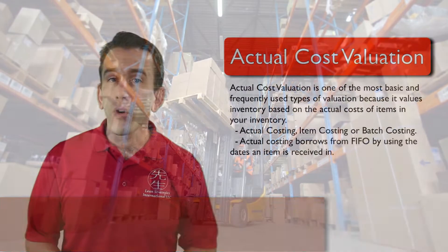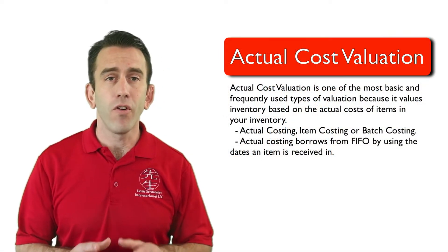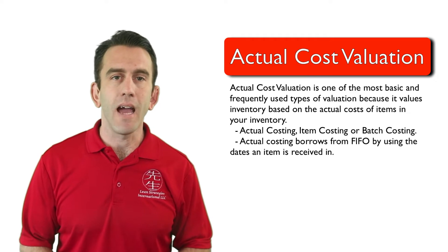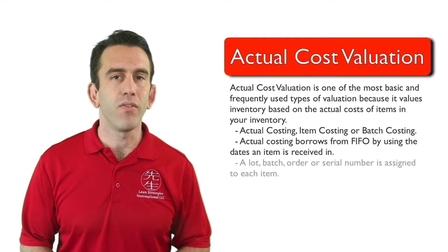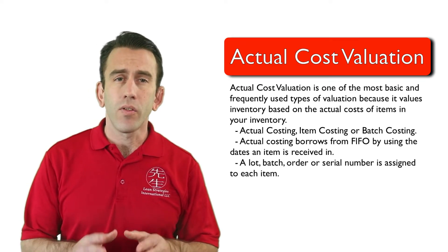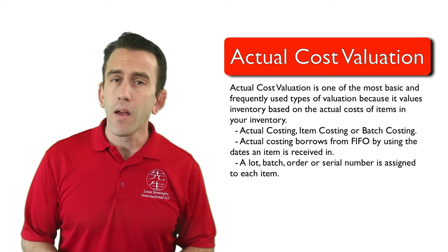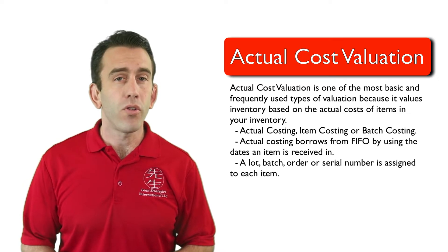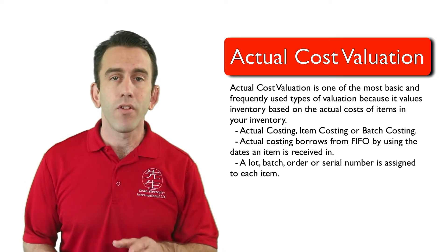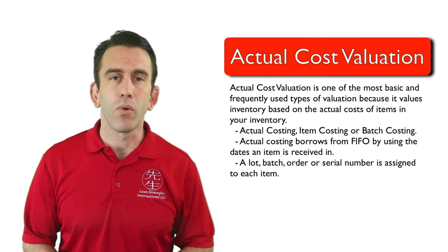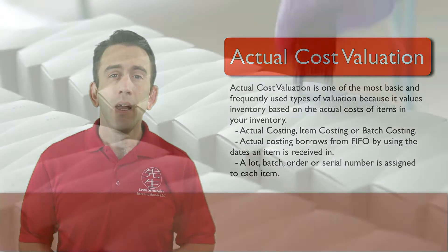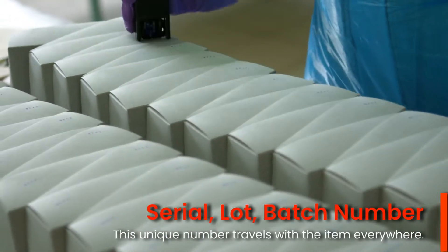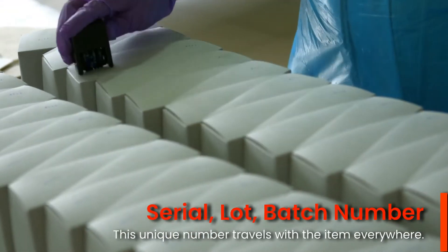Actual costing borrows from FIFO by using the dates an item is received in. It then assigns a lot, batch, order, or serial number to each and every item that is received. This unique number travels with the receipt everywhere.